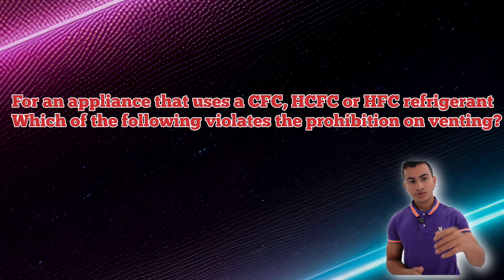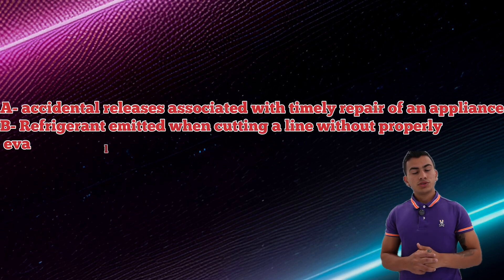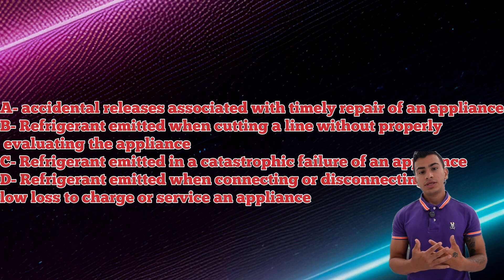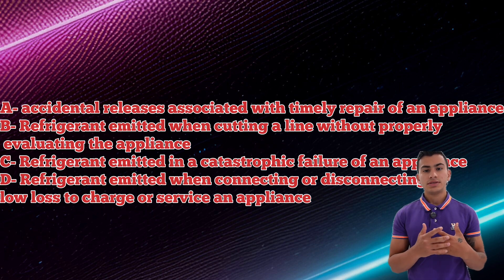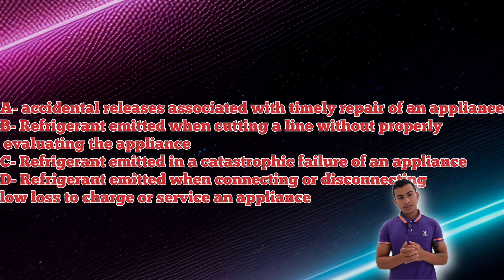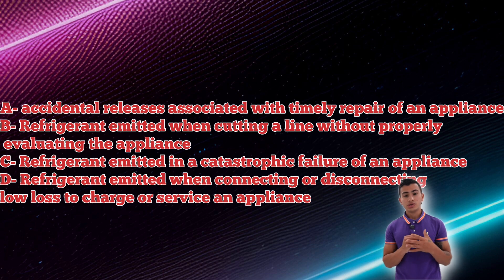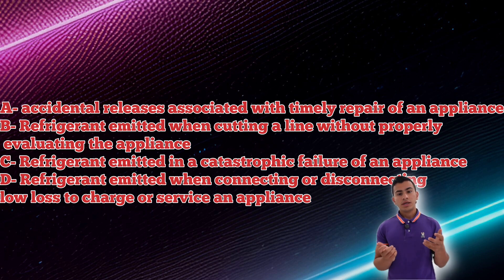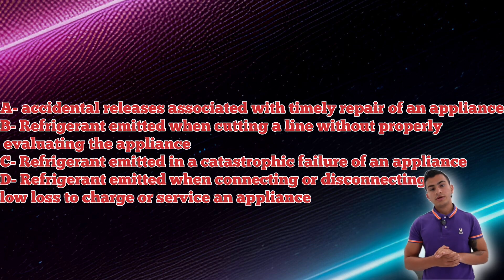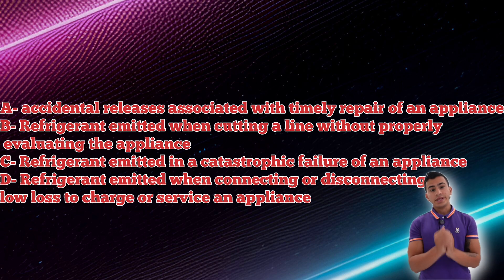For appliances that use CFC, HCFC, and HFC refrigerant, which of the following violates the prohibition on venting? An accidental release — no, it says accidental, meaning you couldn't control it. Refrigerant emitted when connecting or disconnecting hoses with low-loss fittings — no, low-loss fittings are there for a reason and the small amount released is called de minimis. The answer is refrigerant emitted when cutting a line without properly evacuating the system — it is your fault because you did not evacuate the system.